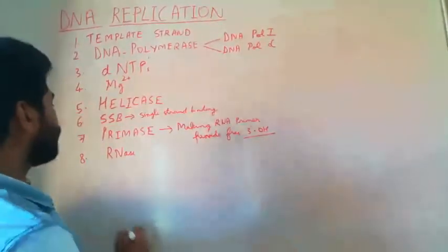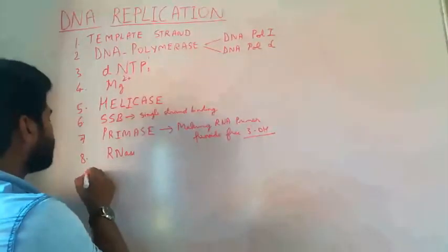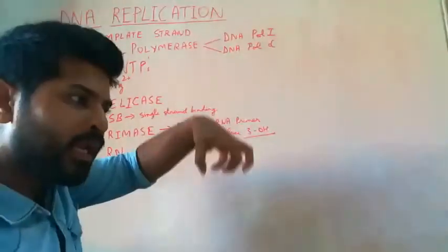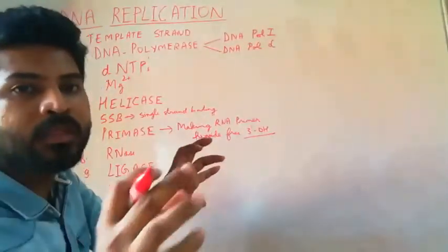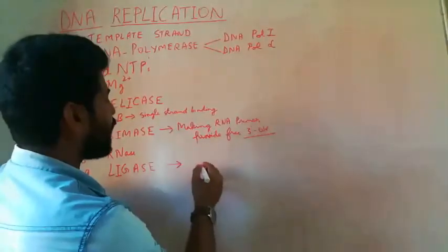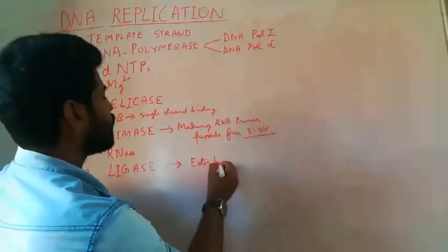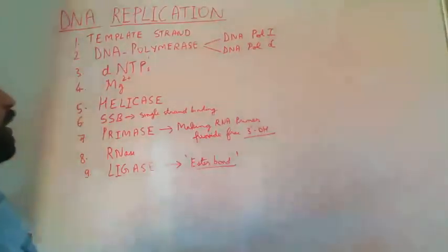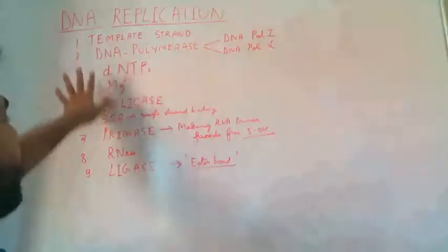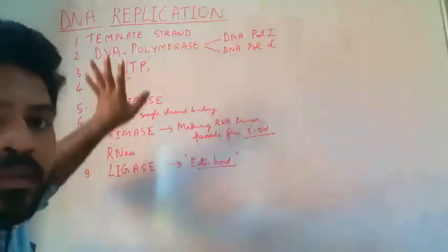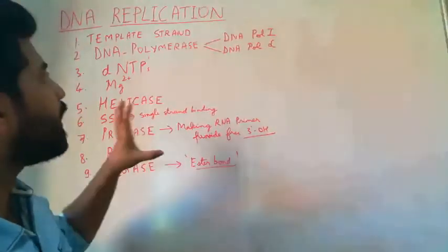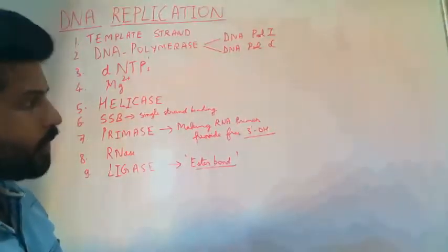The RNase enzyme will remove the RNA primer once polymerization is complete. And finally, we have the ligase enzyme. When the RNA primer is removed, there will be certain small gaps between the DNA fragments. The ligase enzyme will help in joining the 3' OH group and 5' end using an ester bond. By forming this ester bond, the gaps in the newly synthesized DNA can be filled. These are the different biological molecules that play an important role in the formation of a new DNA strand from a parent strand.